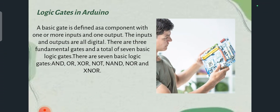The logic gates that are used in Arduino — the basic logic gate is defined as a component with one or more inputs and one output. The inputs and outputs are all digital. There are three fundamental gates and a total of seven gates.